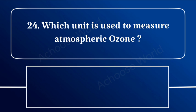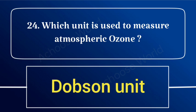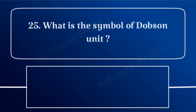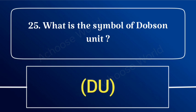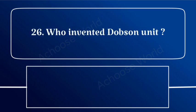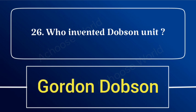Which unit is used to measure atmospheric ozone? Dobson unit. What is the symbol of the Dobson unit? DU. Who invented the Dobson unit? Gordon Dobson.